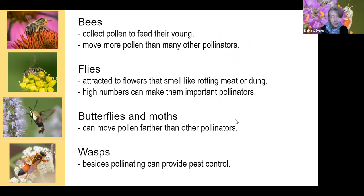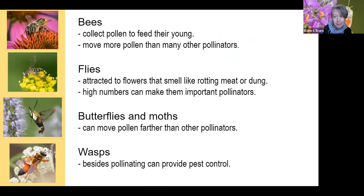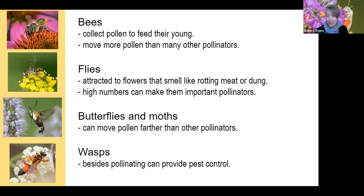Among the broad groups of pollinators, bees collect pollen to feed their young — which is different from a lot of other pollinators. This means they tend to move more pollen, which is why conversations about pollinators often end up being just about bees. But there are other creatures that are important pollinators in different systems and for different kinds of plants.